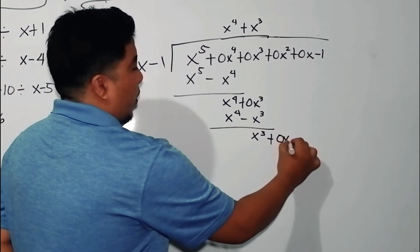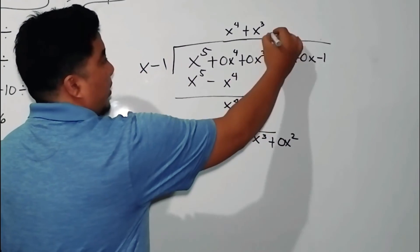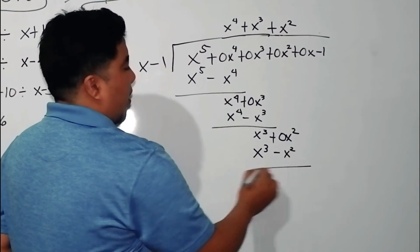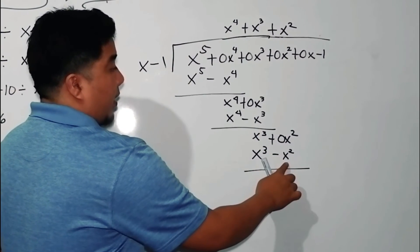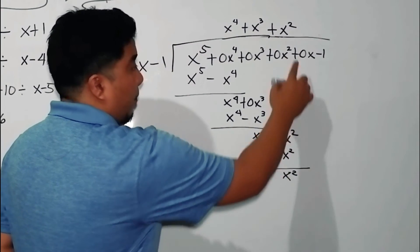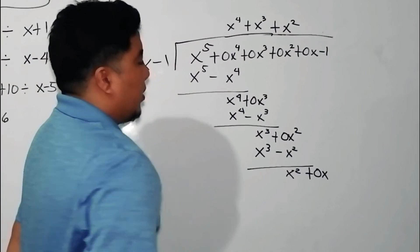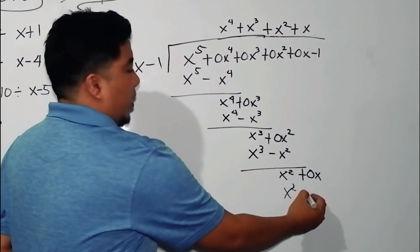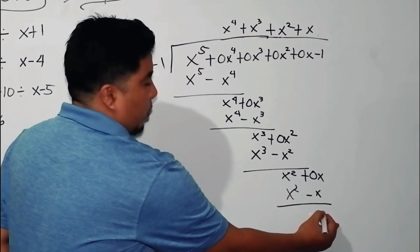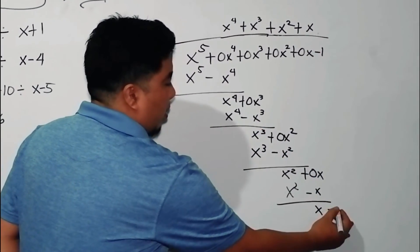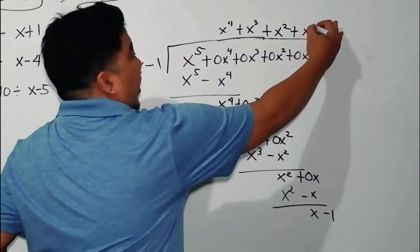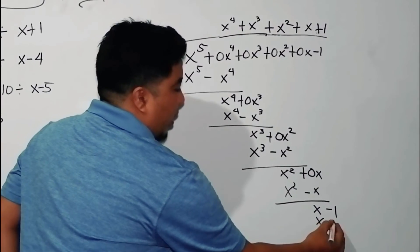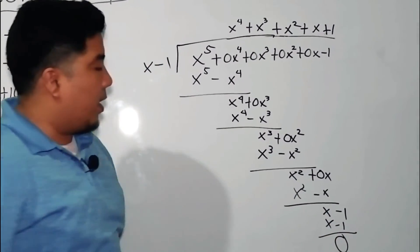x cubed divided by x gives positive x squared. x squared times x is x cubed; x squared times negative 1 is negative x squared. 0 minus negative x squared gives positive x squared. Bring down the linear term. x squared divided by x is x. x times x is x squared; x times negative 1 is negative x. Subtracting gives positive x. Bring down minus 1. So x minus 1 divided by x minus 1 is basically positive 1. 1 times x is x; 1 times negative 1 is negative 1. They are identical, so the final answer is 0 remainder.